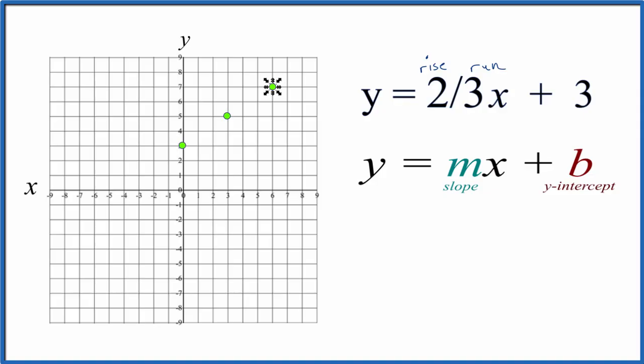We could also go in the opposite direction. We could go down 1, 2, and over 1, 2, 3 in the opposite direction there, and that would also be on our line.